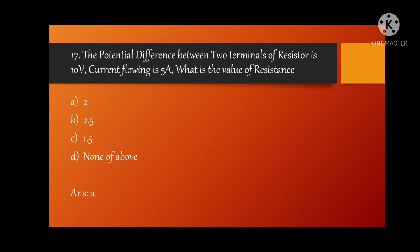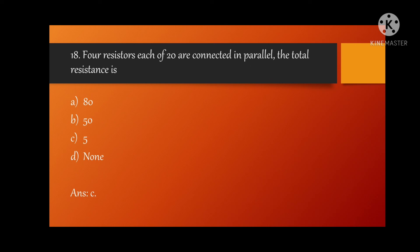MCQ 17: the potential difference between two terminals of resistance is 10 volt, current flowing is 5 ampere, what is the value of resistance? Correct option is 2, option number A. MCQ 18: 4 resistors each of 20 are connected in parallel, the total resistance is?